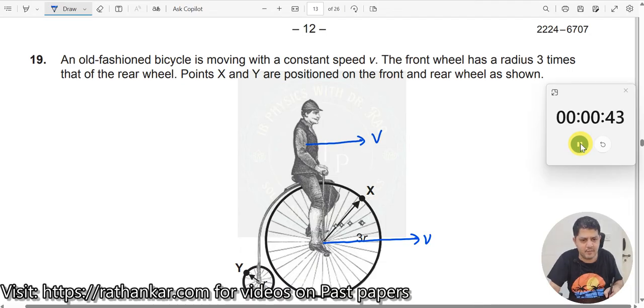This is a very old-fashioned one. So, this has a 3R and this is an R over here. Points X and Y are the front and the rear wheel as shown. Okay. Which means here also this is going at the same speed. Right.